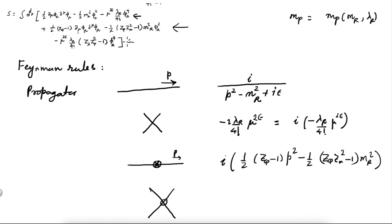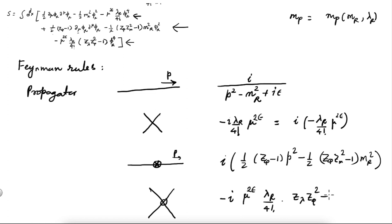These two-point counterterm vertices are usually denoted by putting a cross on the vertex. All vertices in this action that carry factors of the Z's will be denoted by a cross. There is also a four-point counterterm vertex with a cross, coming from the last line of the action, with factor i times minus mu to the 2 epsilon times lambda_r over four-factorial times (Z_lambda Z_phi-squared minus 1).